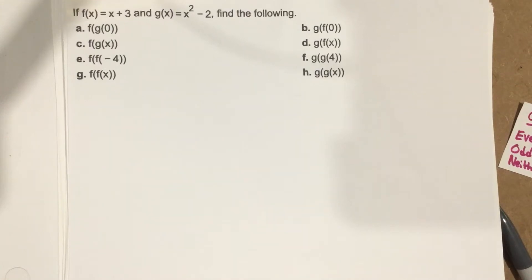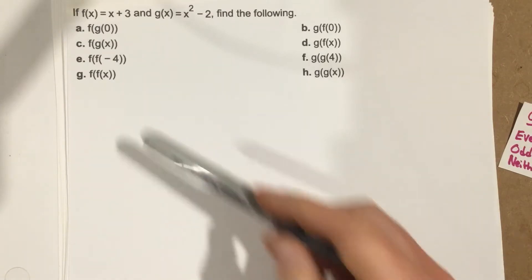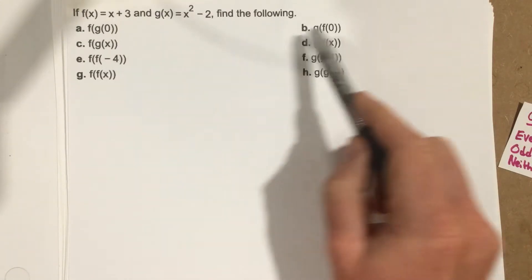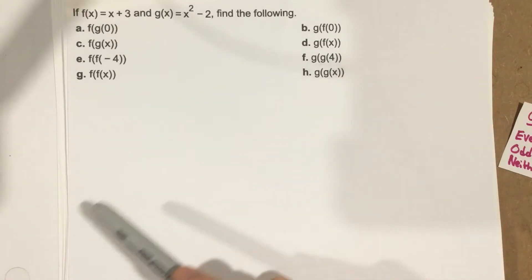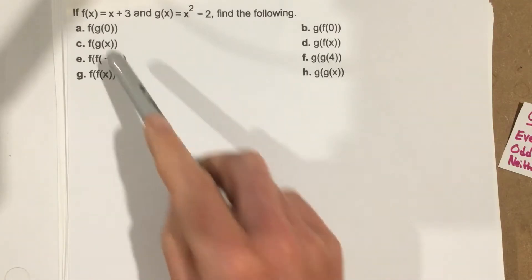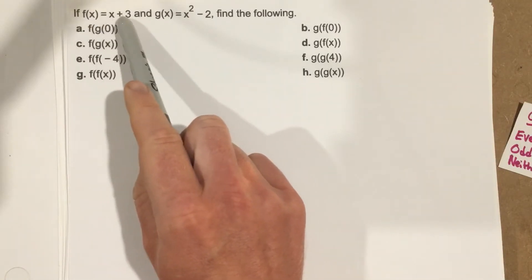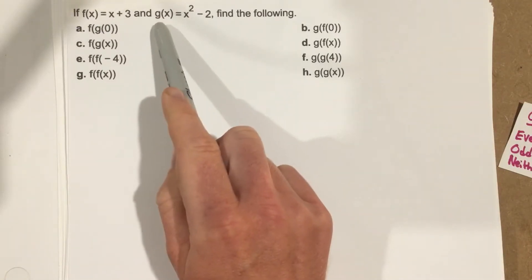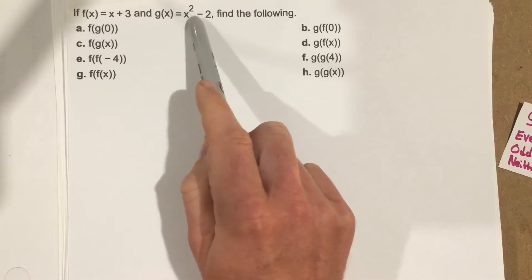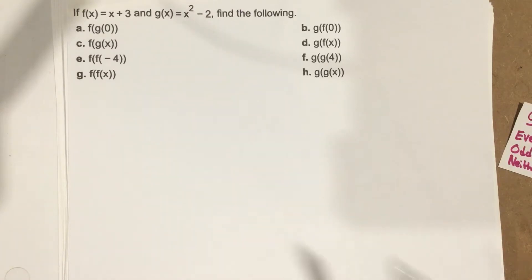This is problem number 3 from section 1.2. In this problem, we're going to find various compositions of functions for the f(x) function, x plus 3, and the g(x) function, x squared minus 2.